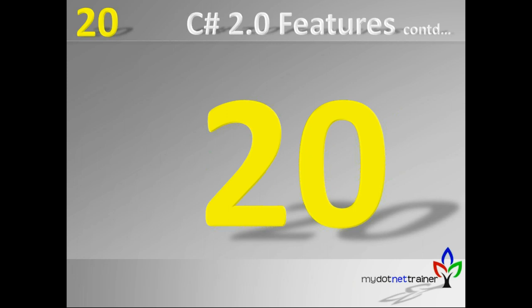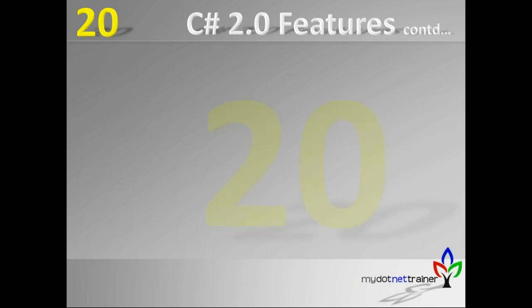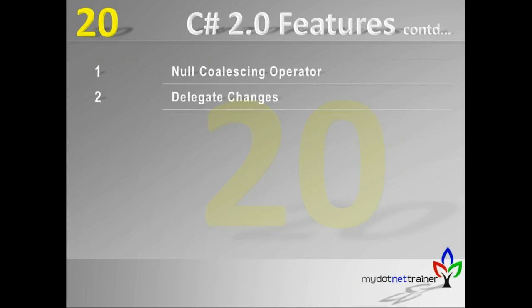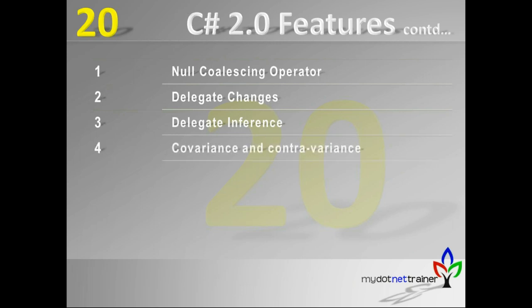We are in session 20. We'll continue with C# 2.0 features, which covers the null coalescing operator, delegate changes — the delegates have been there since 1.0 and there have been a couple of enhancements. We'll see what those enhancements are, including delegate inference, covariance and contravariance, anonymous methods, and captured variables. All of these will be covered in this session.